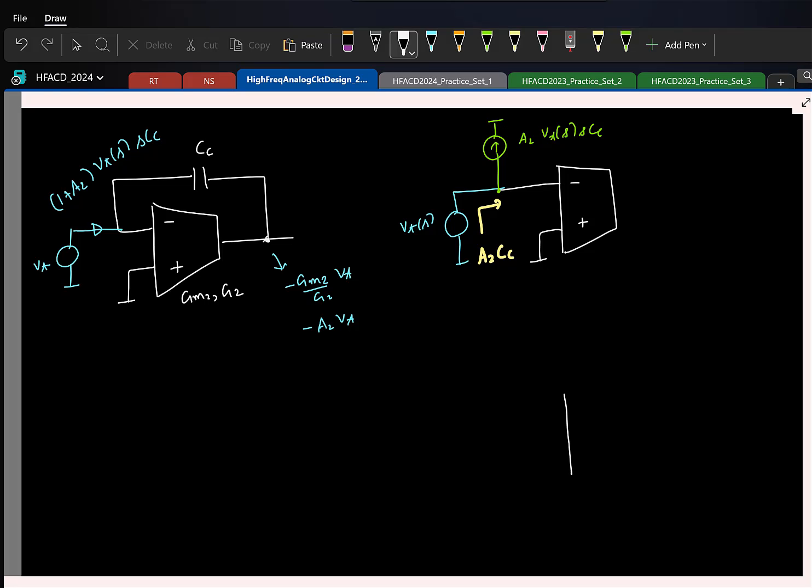So, the second question is how would you do that? It is not that difficult to see. If this is V test, now I want to get a voltage A2 times V test. How can I get A2 times V test here? The output is what? I already have this portion. I want to get a current which is this voltage times Scc. What do I do? I have the voltage A2V test. I want to get a current which is A2V test times Scc.